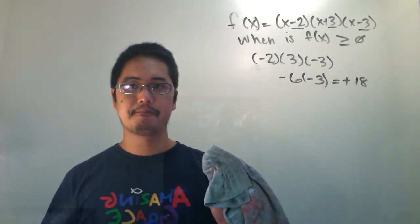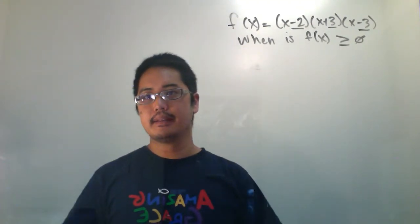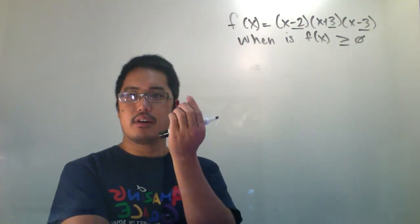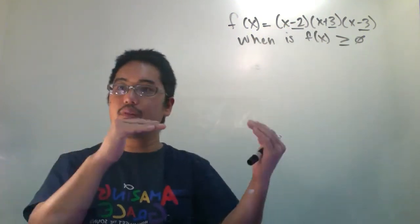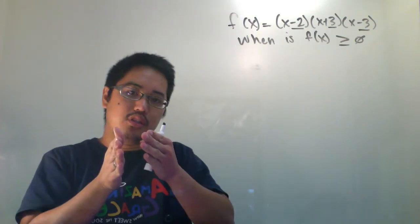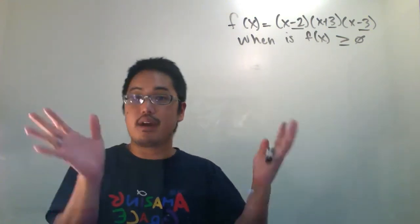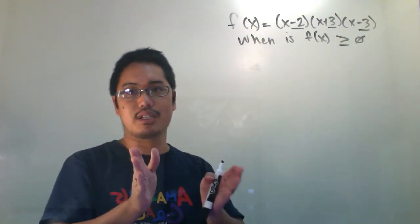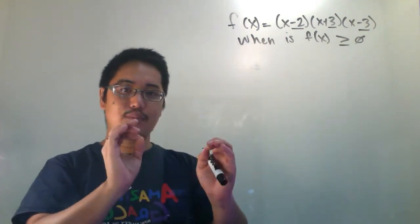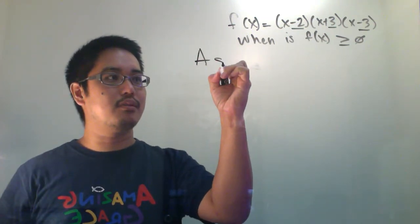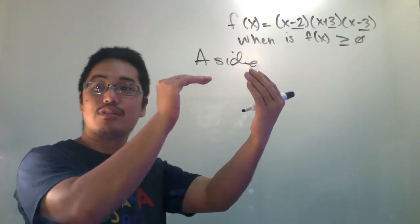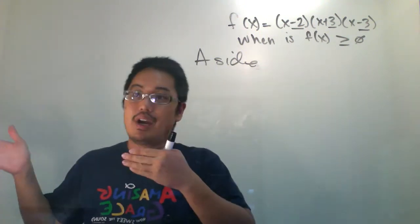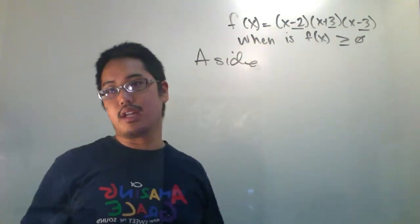Is everyone cool with what I'm doing? I'm going to do an aside — some side work just to prove I'm not crazy. What I mean by aside is I'm going to do a little side calculation. You don't necessarily need to do this when you solve these problems — this is a technique from back in chapter 5 — but let me prove that what I'm talking about makes sense.